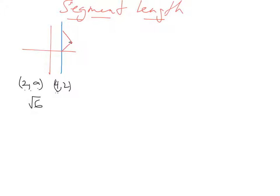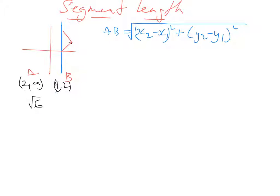We set it up using our length formula. This is point A and this is point B, and we know the length is the square root of 6. Using our formula: AB equals the square root of (x₂ minus x₁) all squared, plus (y₂ minus y₁) all squared. We substitute our values: the square root of 6 equals the square root of (2 minus 4) all squared, plus (A minus 2) all squared.